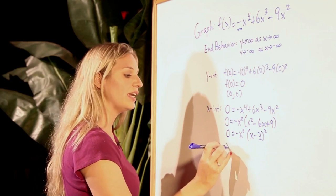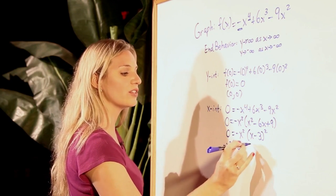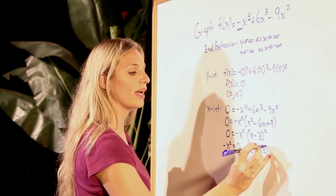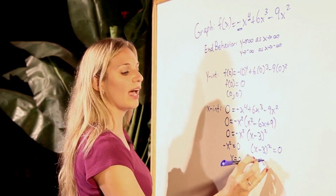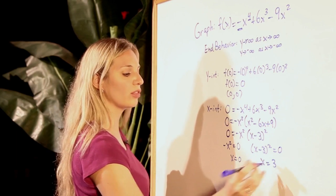Now, setting each of these factors equal to 0 and solving for the x will result in x equaling 0 and then x equaling 3.